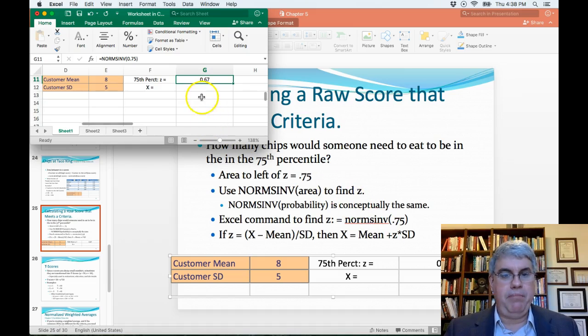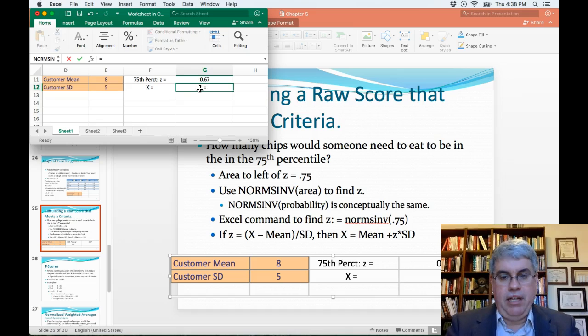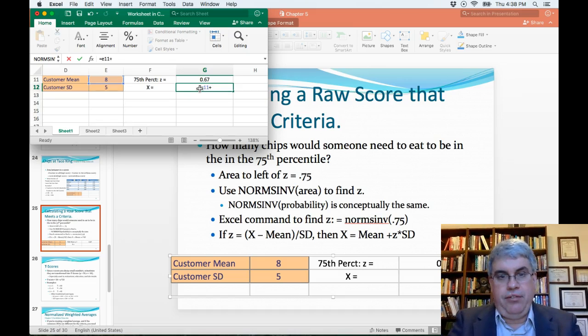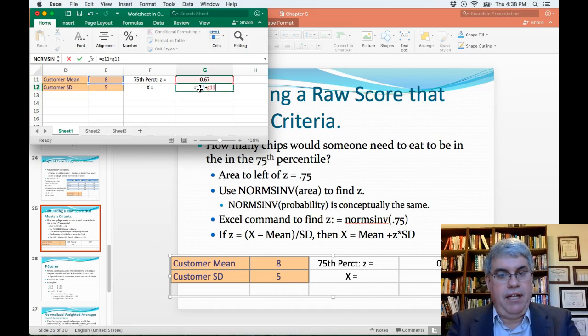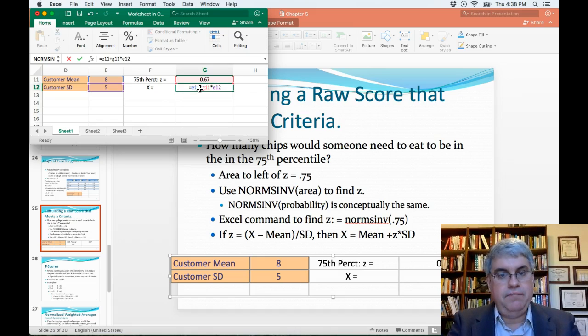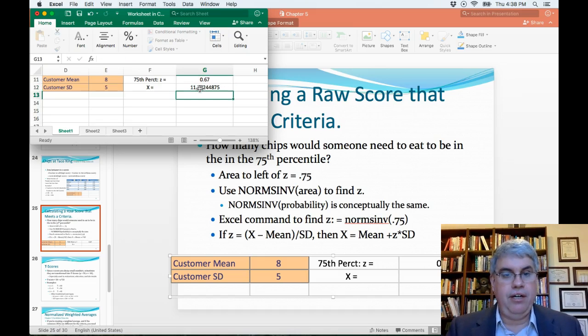So I click in here. I'm going to use my formula equals. Now the mean is B11 plus the z-score is E11, and I'm going to times that with a star by the standard deviation, which is B12. And I press enter, and I get 11.37 chips.